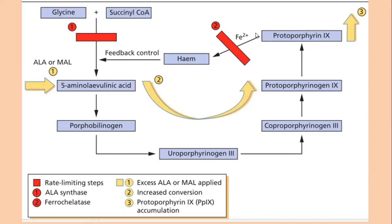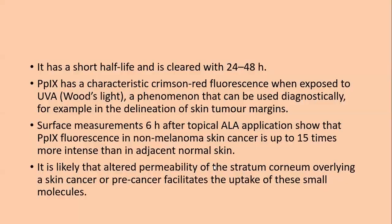This is the heme cycle. The two rate-limiting steps are ALA synthase and ferrochelatase. By applying aminolevulinic acid directly to the skin, we promote increased conversion directly into protoporphyrin IX (PpIX). PpIX has a short half-life and is cleared in 24 to 48 hours, which is one of the requirements of a good photosensitizer.